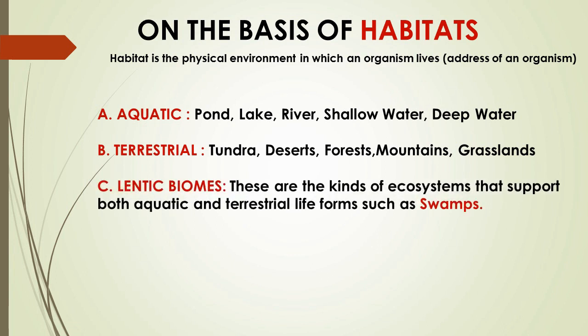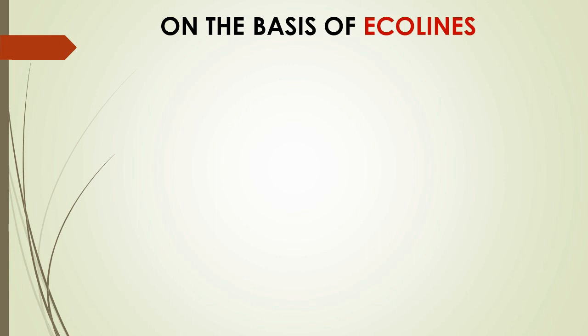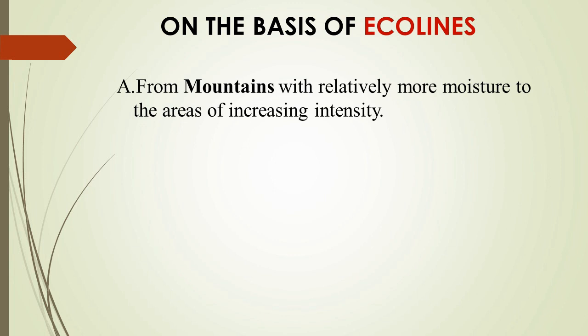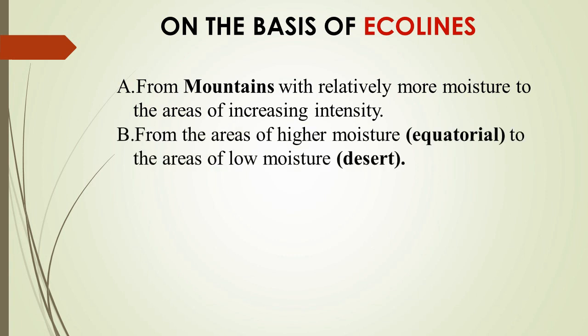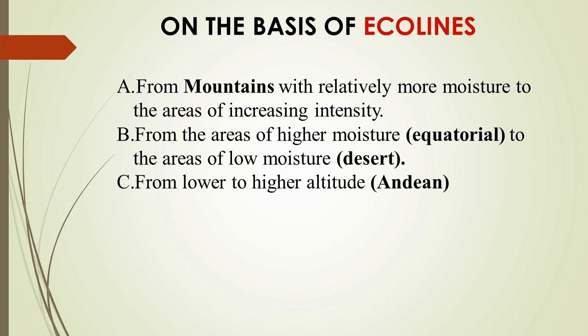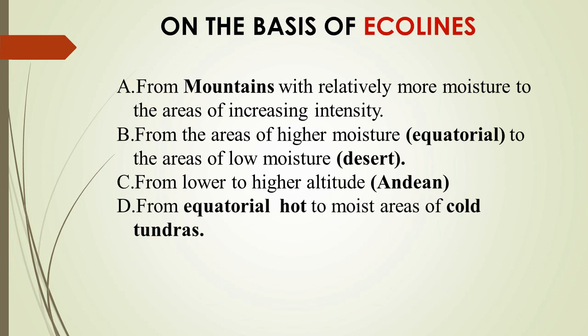Then we have lentic ecosystems, which have characteristics of both aquatic and terrestrial — for example, swampy areas. On the basis of eco lines, there is a gradual change of ecosystem: from mountains with relatively more moisture to areas of increasing intensity; from areas of higher moisture like the equatorial part to areas of lower moisture like desert; from lower to higher altitudes, such as the Andean system; and from equatorial hot and moist areas to cold tundras.